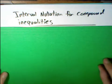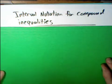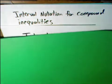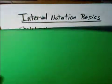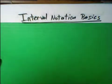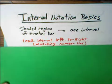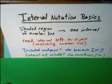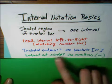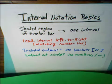In this video, we're going to extend our knowledge of interval notation to encompass compound inequalities. Just to remind you, the basics of interval notation are: each shaded region is one interval, we read it left to right. If we include the endpoint, we use brackets. If the endpoint is not included, we use parentheses.